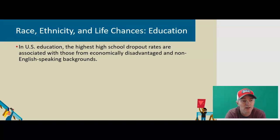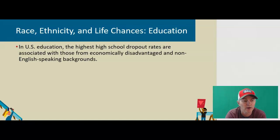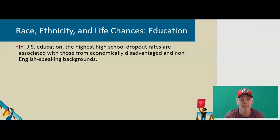In reference to education in the U.S., the highest high school dropout rates are associated with those from economically disadvantaged and non-English speaking backgrounds. Maybe it's true that high school is harder for these individuals, or that they are more likely to have to leave school due to family responsibilities. But think about this from a structural perspective — isn't there any way that the structure of the education system could be modified to encourage individuals to complete their education rather than dropping out?